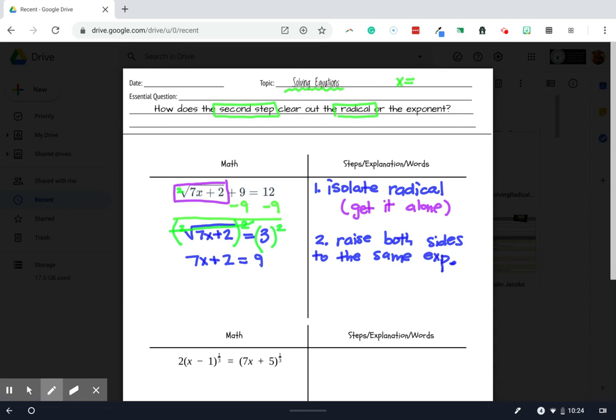At that point, once we get there, then we are going to solve the new equation we just made. We made a new equation that didn't have a radical in it, that no longer has that square root symbol in it, and so it's a lot easier to solve.